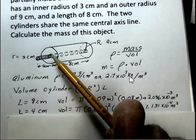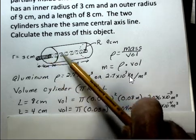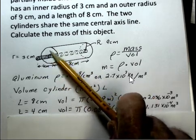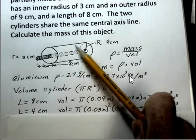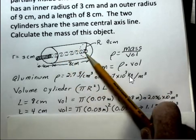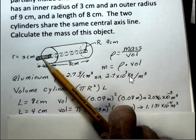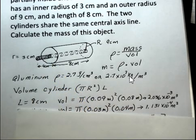But I'm choosing to, since it's all aluminum, just do one cylinder that has a radius of 9 centimeters and it's 8 centimeters long. And then one cylinder that has a length of 4 centimeters and its radius is 3 centimeters.